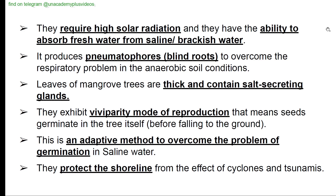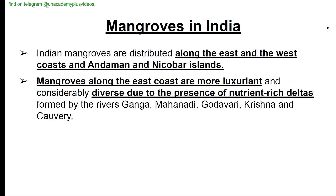Mangroves require high solar radiation and have the ability to absorb freshwater from saline or brackish water. They produce pneumatophores (blind roots) to overcome respiratory problems in anaerobic soil conditions. Leaves of mangrove trees are thick and contain salt-secreting glands. They exhibit viviparous mode of reproduction, meaning seeds germinate in the tree itself before falling to the ground — an adaptive method to overcome germination problems in saline water. They protect shorelines from cyclones and tsunamis.